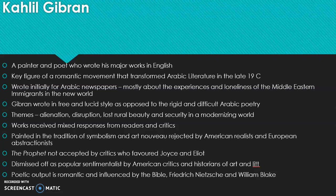He was a part of a romantic movement and carried a lot of romantic ideologies and philosophies about life. As a beginner, he contributed poems and short stories to Arabic newspapers, mostly about the experiences and loneliness of immigrants in the new world. He wrote in a very free and lucid style as opposed to rigid Arabic poetry. His major themes included alienation, disruption, the lost rural beauty, and the loss of security in an increasingly modern world.